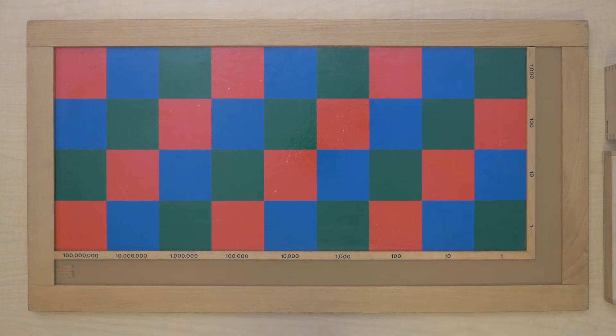But first let's get to know this checkerboard a little bit. So you see we've got numbers down here along the bottom and we've got numbers along this side as well. And you can see some colored squares.